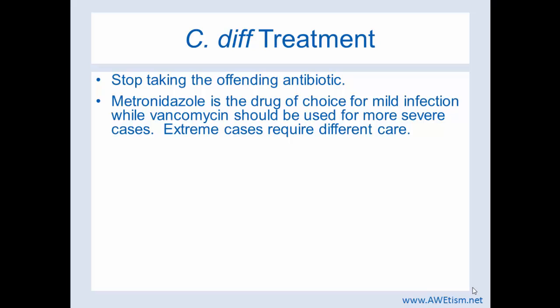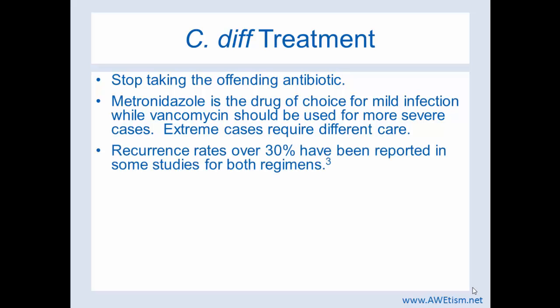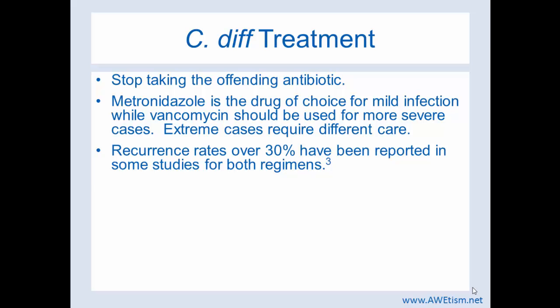That is why you stop taking the offending antibiotic and then start treating for the C. diff infection. Recurrence rates are about 30% for both drug regimens. A review of 63 randomized controlled trials found that patients who received probiotics during their course of antibiotics had a significantly lower rate of antibiotic-associated diarrhea. If an antibiotic kills both pathogenic and beneficial microorganisms, taking a probiotic with beneficial microorganisms would help decrease your chance of getting a C. diff infection.